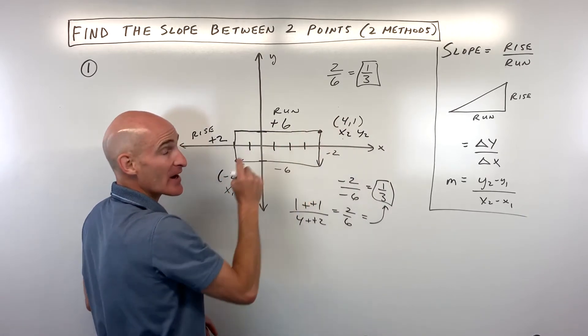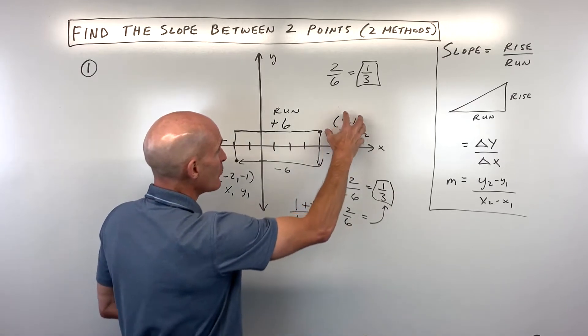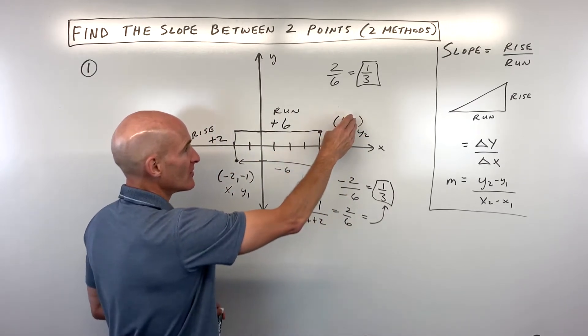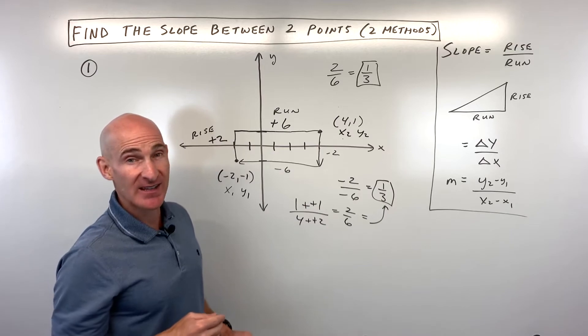They'll say negative 2 minus 4. You want to stay consistent. If you do this point minus this point, you want to keep it the same for both the y's and the x's, that same order.